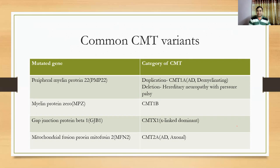So GJB1 causes CMTX, PMP22 causes CMT1A, and if you send tests for PMP22, gap junction protein, and mitochondrial fusion protein, we can detect Charcot-Marie-Tooth disease in 70 to 75 percent of cases.